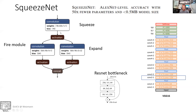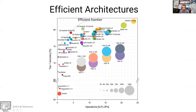SqueezeNet saves a lot of parameters, but in terms of accuracy it's better than AlexNet. Compared to VGG it has a drop in accuracy, so it's much more efficient but not as accurate as VGG.